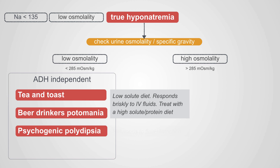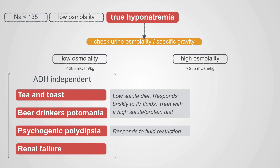Psychogenic polydipsia — patients with compulsive water drinking — can be tremendously ill. It seems like a silly disease, but these are patients who die of hyponatremia and need acute therapy. They respond to fluid restriction, though if symptomatic they need hypertonic saline. Renal failure patients on dialysis or with very low urine outputs will have a urine osmolality close to 300 — kidneys unable to concentrate or dilute urine. These respond to fluid restriction and dialysis.